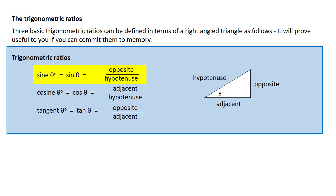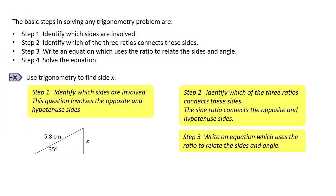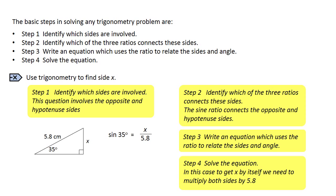Sine of any angle equals the opposite side over the hypotenuse side. Step 3, write an equation which uses the ratio to connect together the sides and angle. In this case, the sine of 35 degrees equals opposite x over hypotenuse 5.8. From there it's just a matter of solving this equation, shuffling it round until you end up with x equals.